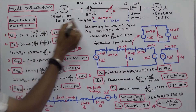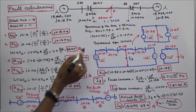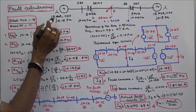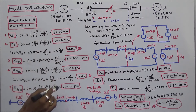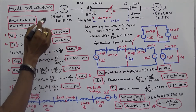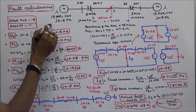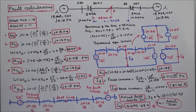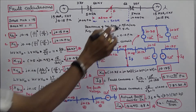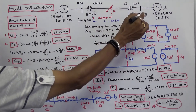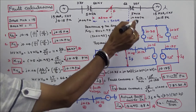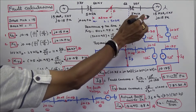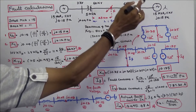The generators are identical. They are star connected, rated 15 MVA, 11 KV. The subtransient reactance is J.15 per unit. Generator 2 is also 15 MVA, 11 KV with subtransient reactance J.15 per unit.